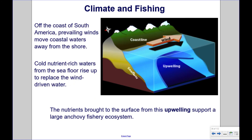Off the coast of South America, prevailing winds move coastal waters away from the shore. Cold, nutrient-rich waters from the seafloor rise up to replace the wind-driven water. The nutrients brought to the surface from this upwelling support a large anchovy fishery ecosystem.